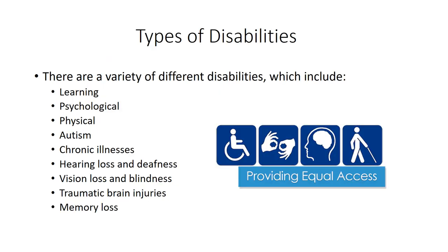Now that we have talked about the definition of a disability, we are going to discuss some different types of disabilities. There are a variety of different disabilities which can include learning, psychological, physical, and intellectual disabilities. Autism, chronic illnesses, hearing loss and deafness, speech and language disorders, vision loss and blindness, traumatic brain injuries, and memory loss are considered disabilities as well. Many of these disabilities are often easy to see and understand, but some disabilities are considered hidden or invisible because they are not apparent, including learning and psychological disabilities.